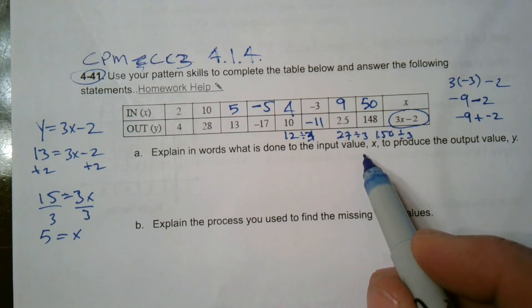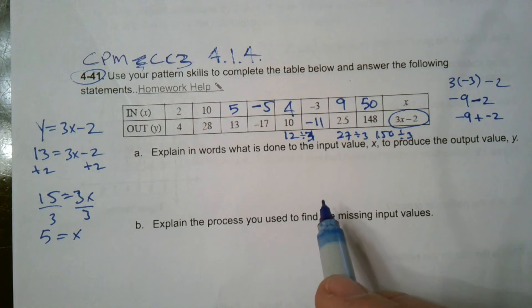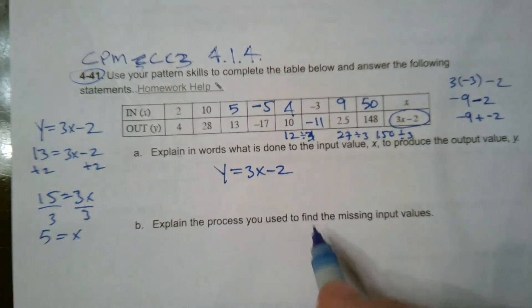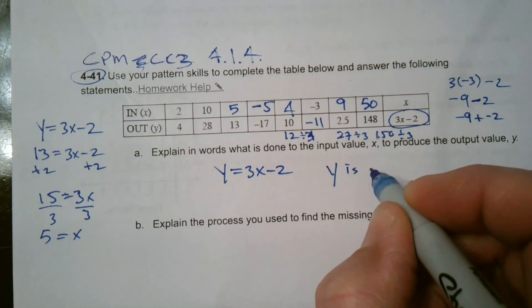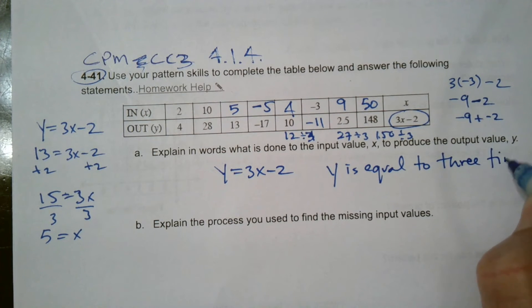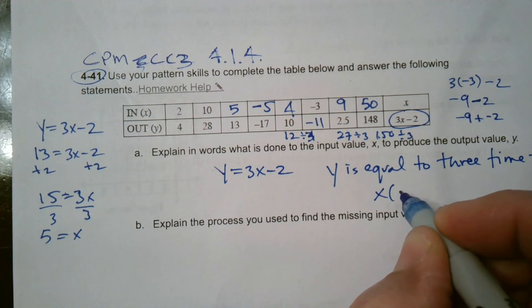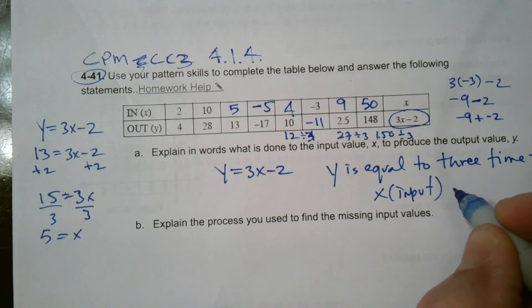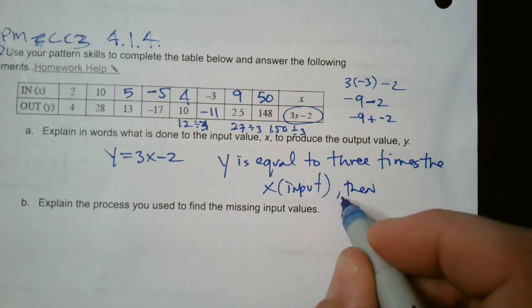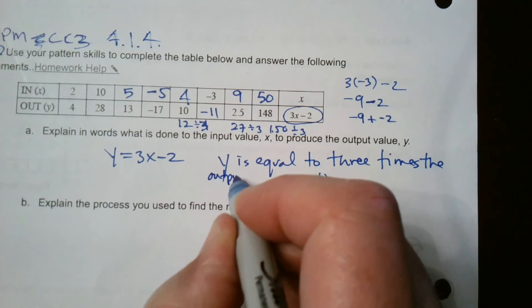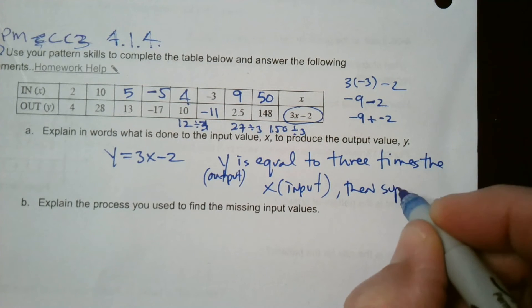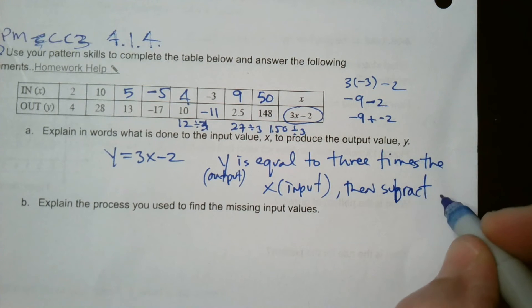All right. So I got my table filled out. Now, explain in words what is done to the input value X to produce the output value Y. So what are we doing? Here's my algebra. The algebra Y is equal to 3X minus 2. So in words, what does that mean? Y is equal to three times the X or the input.